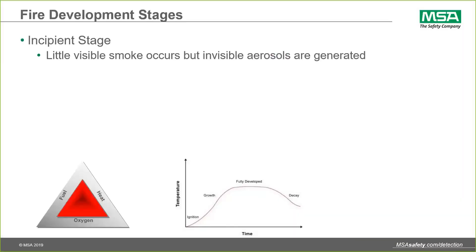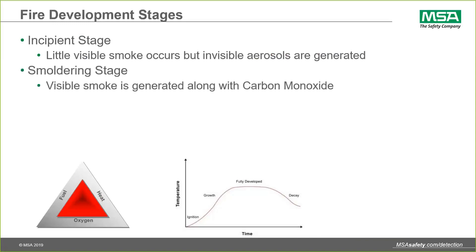The first stage of a fire is the incipient stage where we have some smoke — not much — but primarily invisible aerosols are generated. The next stage, after this fire triangle has been completed, is the smoldering stage where now we have some visible smoke along with some CO.